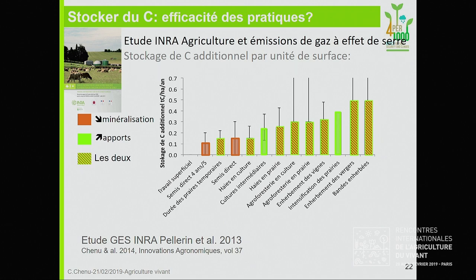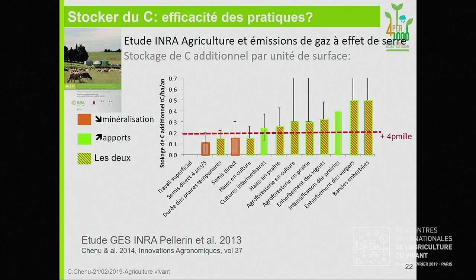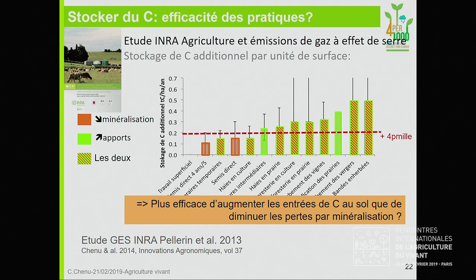Les barres d'erreur sont celles de la littérature, donc on a encore besoin d'affiner. J'ai représenté sur le graphique les pratiques qui jouent essentiellement en diminuant les sorties par minéralisation — c'est la réduction du travail du sol — et les pratiques qui jouent essentiellement en apportant de la biomasse supplémentaire, comme les cultures intermédiaires, et celles qui mobilisent les deux. Apparemment, pour que ce soit efficace, il faut apporter de la biomasse en plus. Il est plus efficace d'augmenter les entrées de carbone au sol que de diminuer les pertes par minéralisation. C'est ce que suggère cette synthèse.